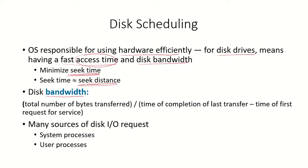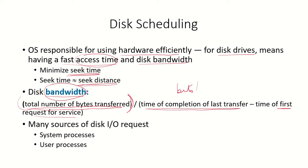The second factor is disk bandwidth. Bandwidth is defined as the total number of bytes transferred from the disk divided by the total time from the first request for service to the completion of the last block transfer. This gives us the bandwidth of the disk, which could be expressed in bits per second — for example, 1 gigabit per second.